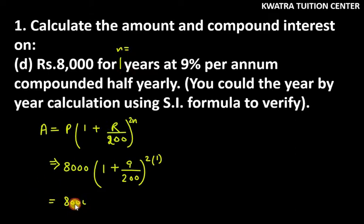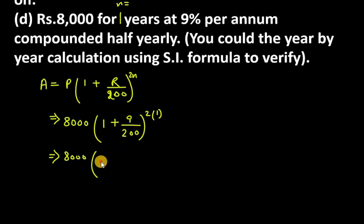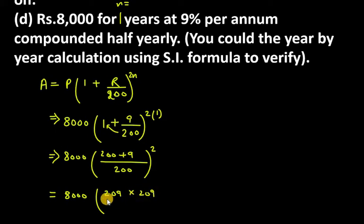So we get 8,000 times in bracket 209, because when we take LCM we get 200 plus 9, raised to power 2. This becomes 8,000 times 209 twice, since it's squared. So 200 in the denominator twice, because if the numerator is squared, the denominator is also squared.